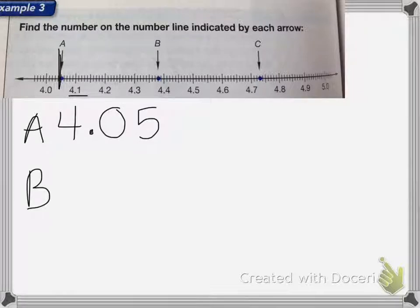For B, it's going to be 4.3 and a little bit more. So we count it. 1, 2, 3, 4, 5, 6, 7, 8. So B is pointing to the eighth tick mark, so it's going to be 4.38.